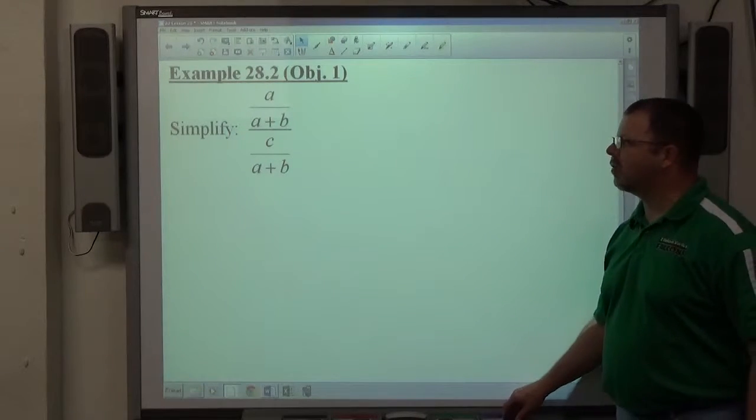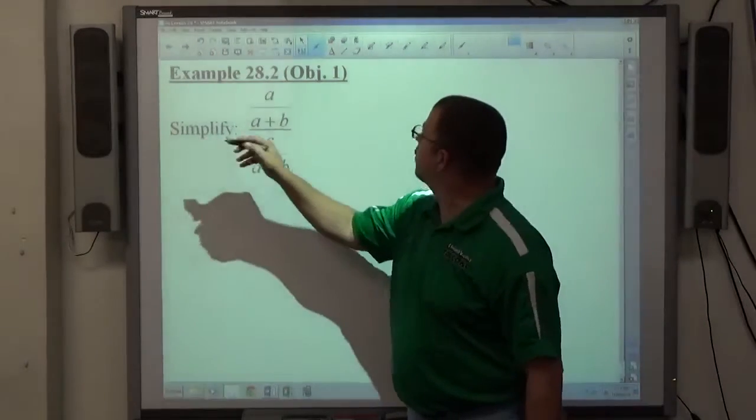Example two: A over A plus B, over C over A plus B. Again, simplify the directions, and again,